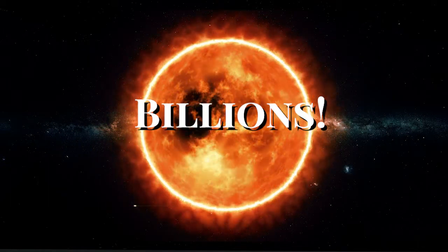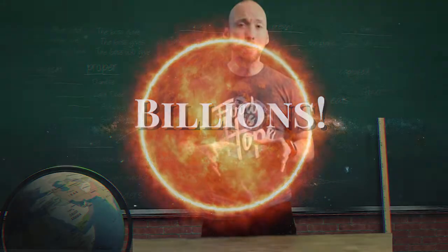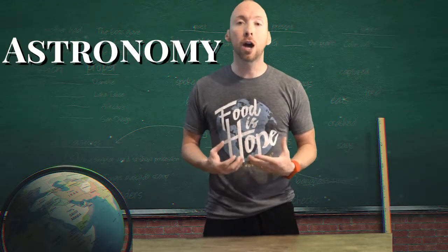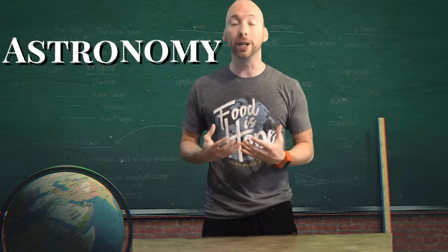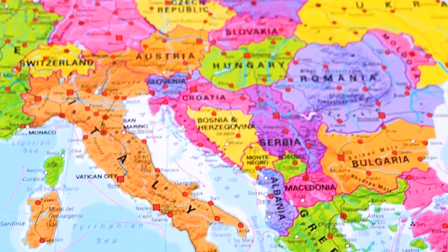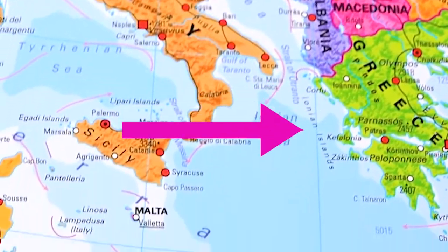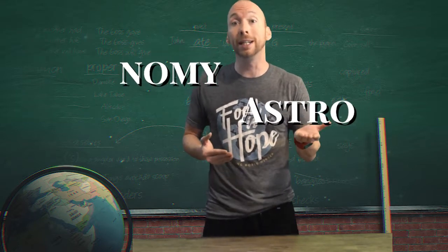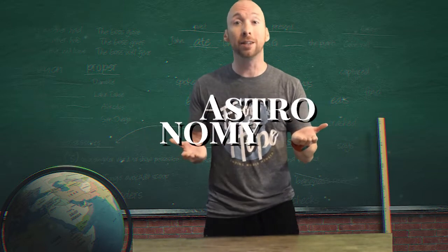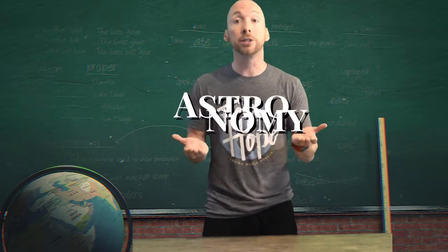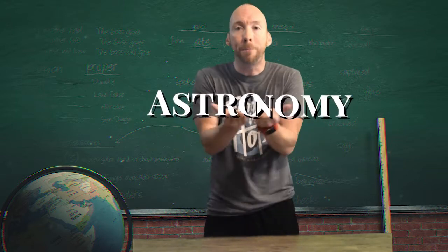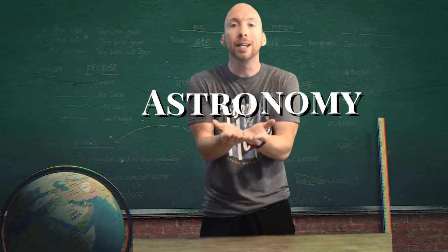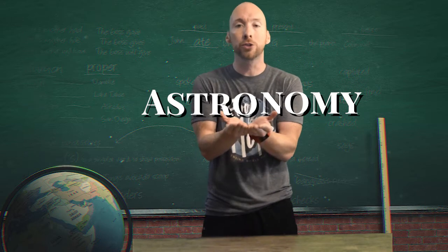That's right, billions of years! Knowing about stars is also called astronomy. Astronomy is a word that comes from the Greeks — Greece is a country near the boot-shaped country Italy. It combines two Greek words: astro, meaning relating to the stars, and nomi, meaning the knowledge or laws of something. So if you combine astro and nomi, or astronomy, you get the knowledge or laws of the stars.